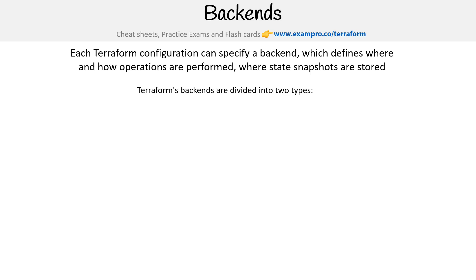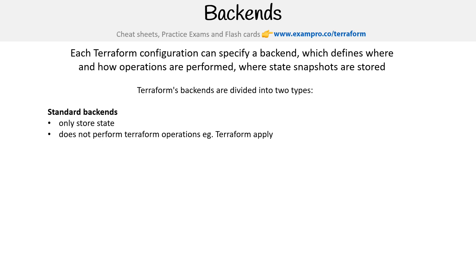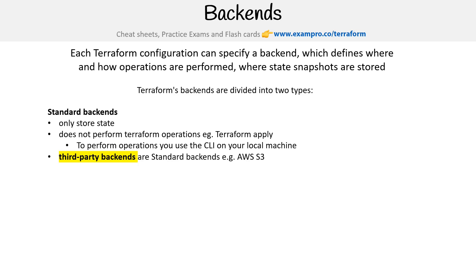Terraform divides their backends into two types: standard and enhanced. Looking at standard first, this is where you can only store the state, and it does not perform Terraform operations such as Terraform apply. To perform operations, you have to use a CLI on your local machine. The reason why is that standard backends are basically third-party backends — a standard backend could be AWS S3, which is a storage service and doesn't have the capabilities of programmatically triggering things.